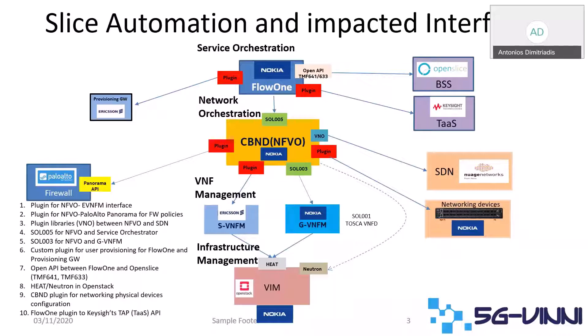When we talk about network slices, we don't talk about VNF onboarding only. We need to create the networks through the SDN, or through the physical network devices. We need to apply policies in the firewall — in our case, a Palo Alto — so we can define which VNF can talk to which VNF. At the end, once the network slices are in place, the user should be able to use them, so we need an interface to the provisioning gateway. For some of these we use open standard APIs, but for most we had to create proprietary plugins. That was the biggest challenge and took us quite some time.